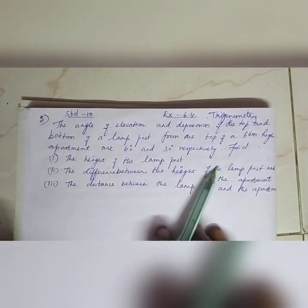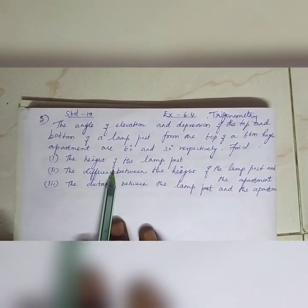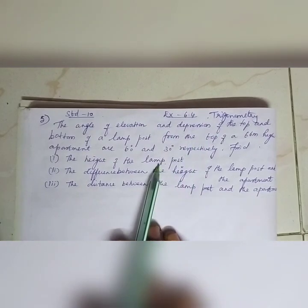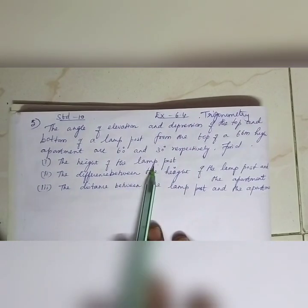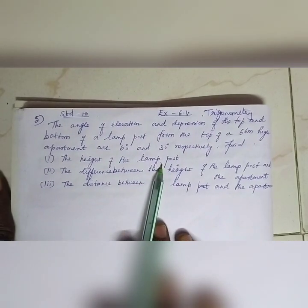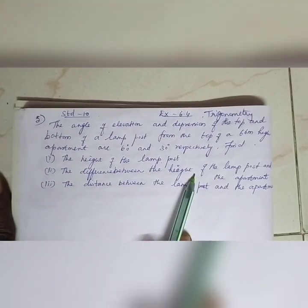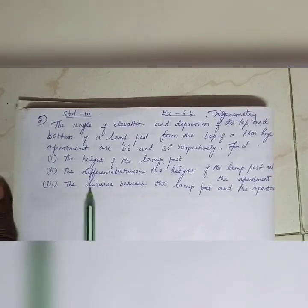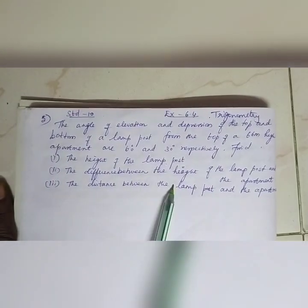Now in the question, we will look at elevation and depression. The height of the lamp post, the difference between the lamp post and apartment — these are 3 different questions we need to solve.